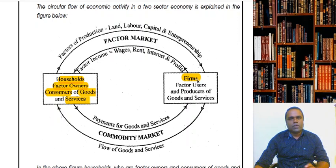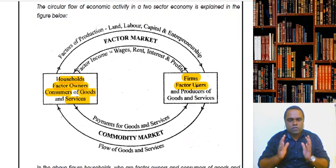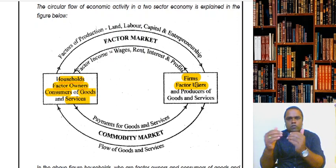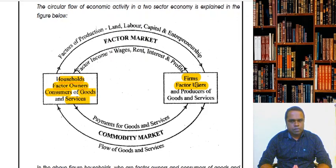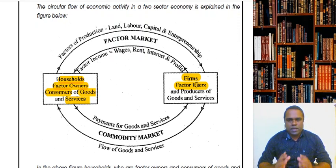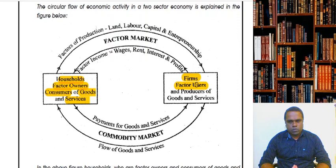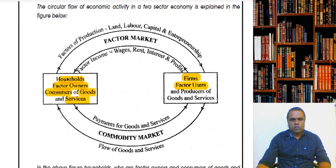On the other hand, firms are known as factor users. If you have some land or a building and you give it to a business firm — say, you rent your land to some business — or if you have labor and you go work in a factory, that means you are selling your labor. Or if you have savings in a bank and you lend it to a company as capital, that means firms are the factor users. So households are factor owners of land, labor, and capital, and firms are the factor users.